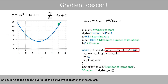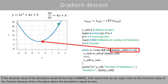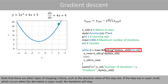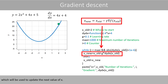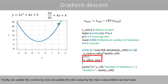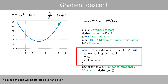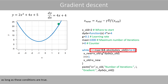We will continue to iterate as long as the counter is less than the maximum number of iterations, and as long as the absolute value of the derivative is greater than 0.00001. If the absolute value of the derivative would be less than 0.00001, that means that we are super close to the minimum value of the function, because that is the place where the derivative is equal to zero. Note that there are other types of stopping criteria, such as the absolute value of the step size. For each iteration, we calculate the derivative of the function at the current value of x, which will be used to update the next value of x. Finally, we update the counter by 1, and update the old x value by the new x value before we start over. This piece of code will be iterated over and over as long as these conditions are true.